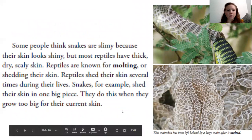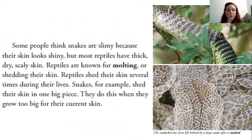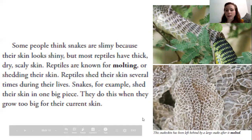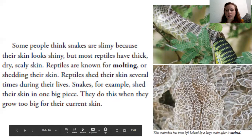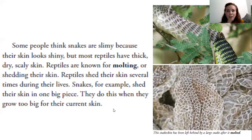Some people think snakes are slimy because their skin looks shiny, but most reptiles have thick, dry, scaly skin. Reptiles are known for molting or shedding their skin. Reptiles shed their skin several times during their lives. Snakes, for example, shed their skin in one big piece. They do this when they grow too big for their current skin. Over here in the photographs, we can see a snake is molting. It says the snake skin has been left behind by a large snake after it molted. I've even found molted snake skins left in my yard sometimes. You can find those if you're out hiking or maybe even in your yard.